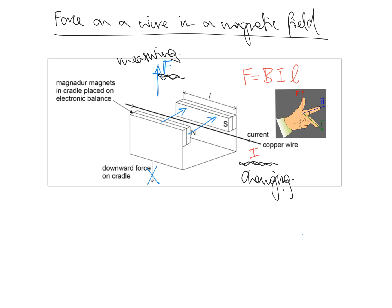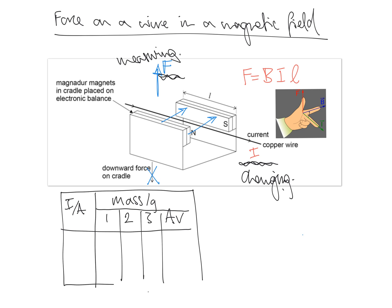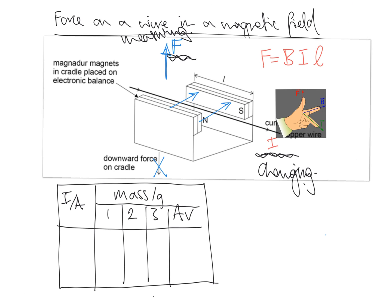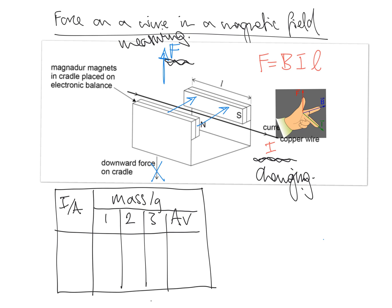So, in the usual way we write down a table of results, we are changing the current in amps, and we're measuring the force, or indeed the mass, because the balance actually measures the mass. Once, twice, three times, and an average in grams. That will be the table of our results.